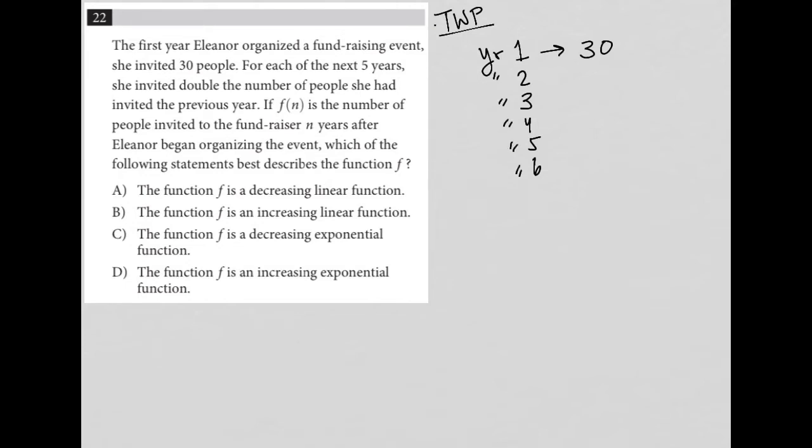So for each of the next five years, she invited double the number of people she had invited the previous year. Okay, so that means year 2, there should be 60 invites. Double 60 is 120. Double of 120 is 240. Double 240 is 480. And double 480 is 960.